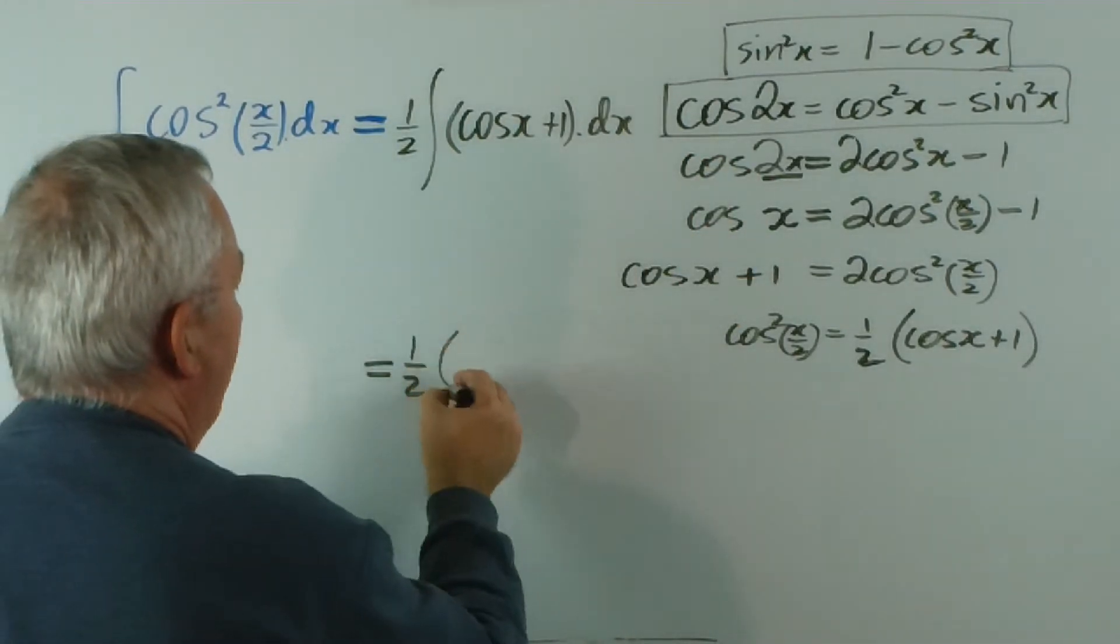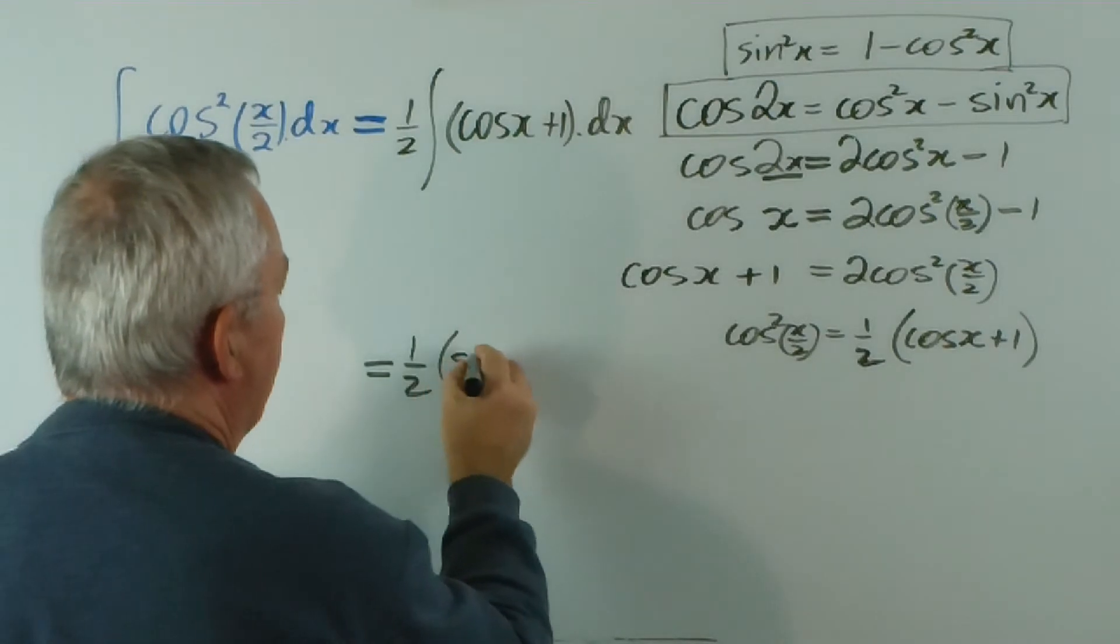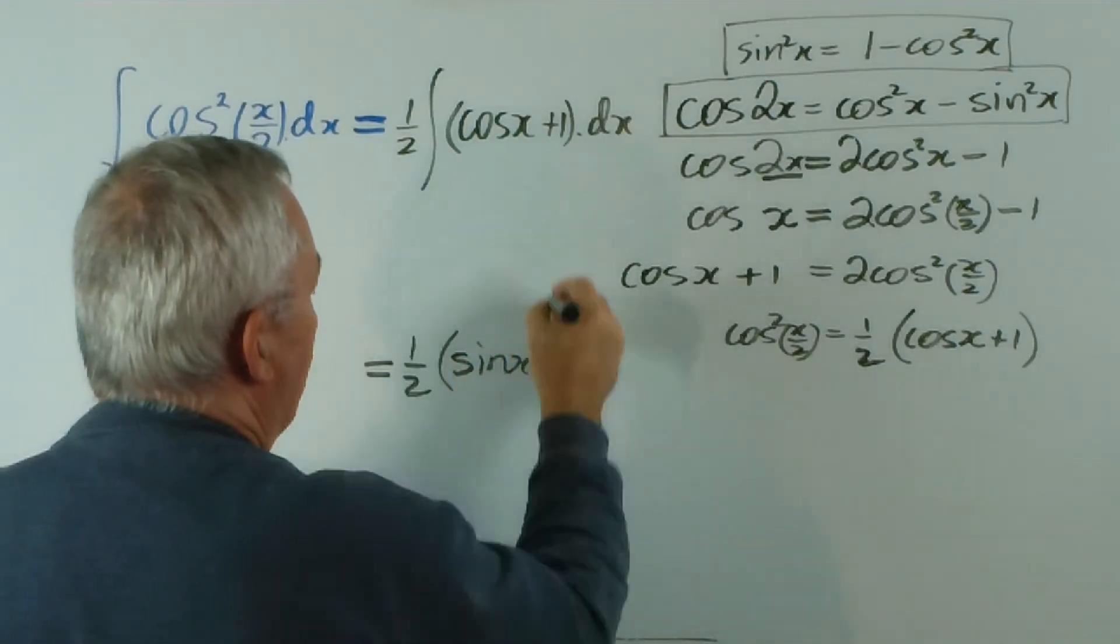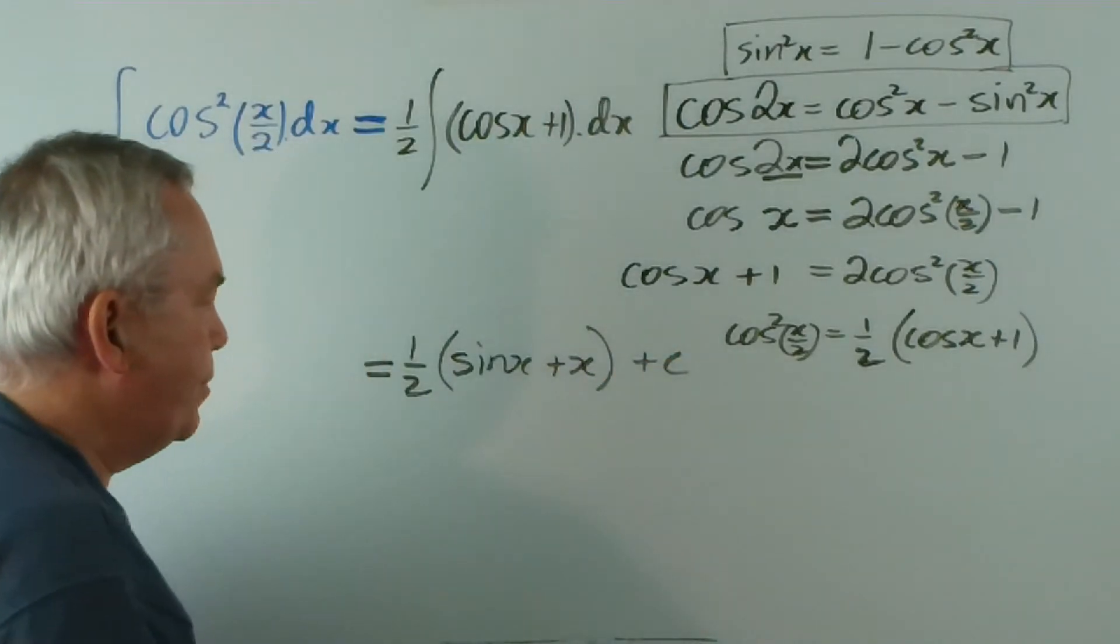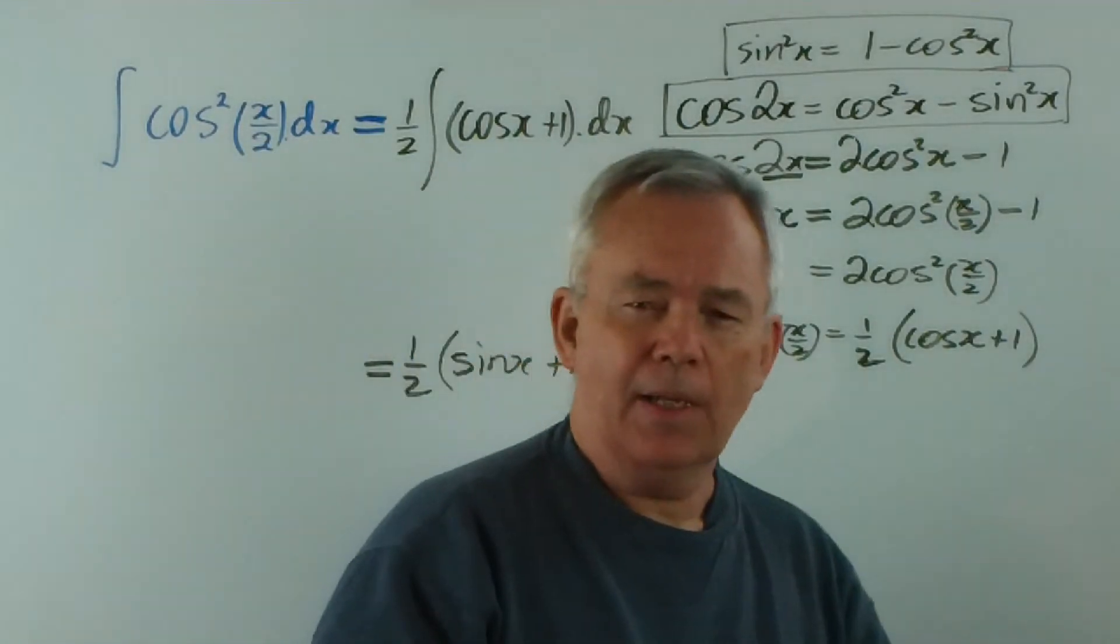And that will give us a half of the integral of cos, sin x. The integral of 1 is x plus a constant. And we've succeeded in integrating.